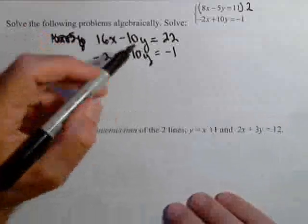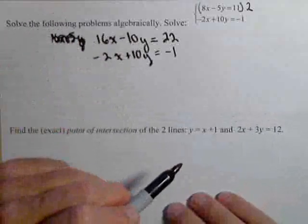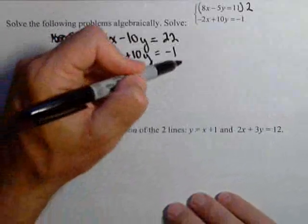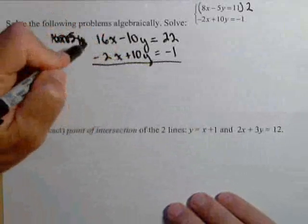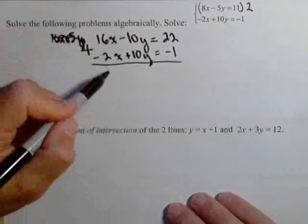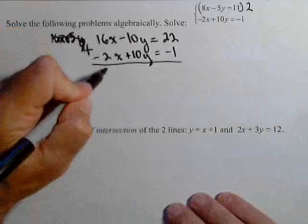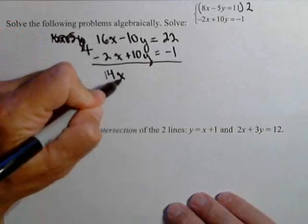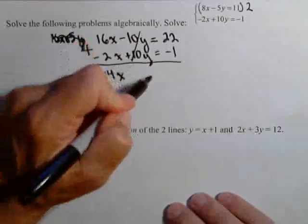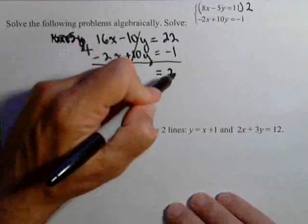I always like them to have opposite signs because I like adding them. I'm basically going to add these two equations together. So 16x plus a negative 2x is 14x. Those cancel. Equals 21.